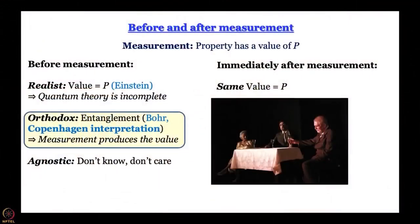What happens after measurement? Everybody agrees: immediately after the measurement we have the same value p, because if you keep making measurements in short succession you keep getting p. This is called wave function collapse — before measurement many wave functions are entangled; once measurement is made, the system collapses into one particular wave function and continues to be defined by that.